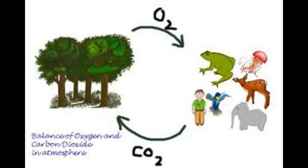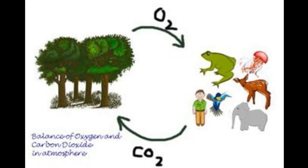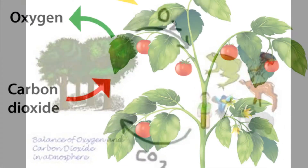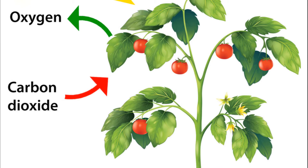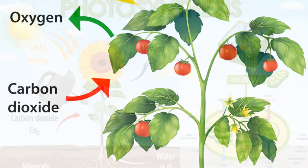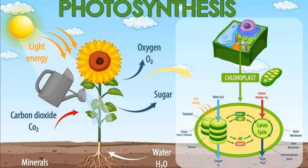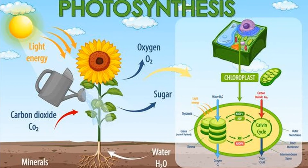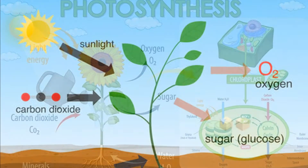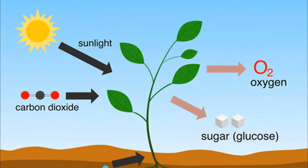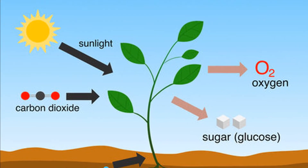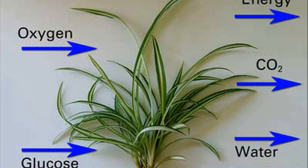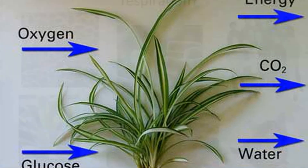The first one is the oxygen-carbon dioxide balance. Green plants use the carbon dioxide present in air to prepare food by the process of photosynthesis. As a result of photosynthesis, oxygen is given off, which is used in the process of respiration.